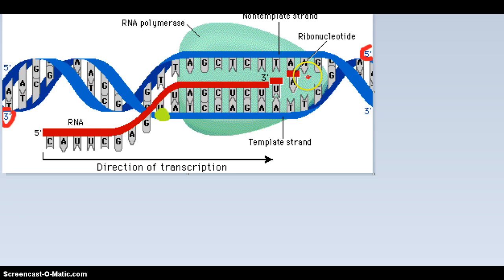And this allows the RNA strand to be made. Now that the signal has arrived, this is now called the RNA polymerase. And it will travel from a 3' end to a 5' end.